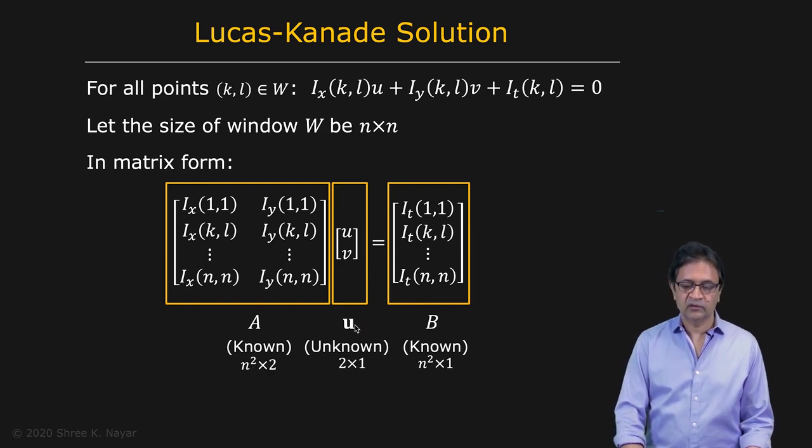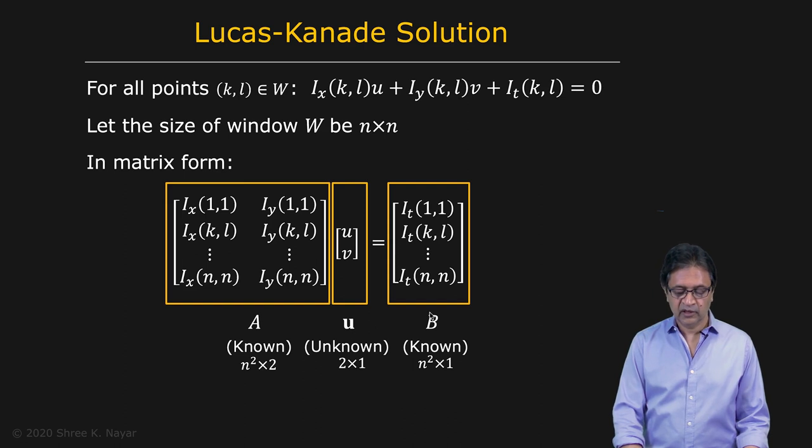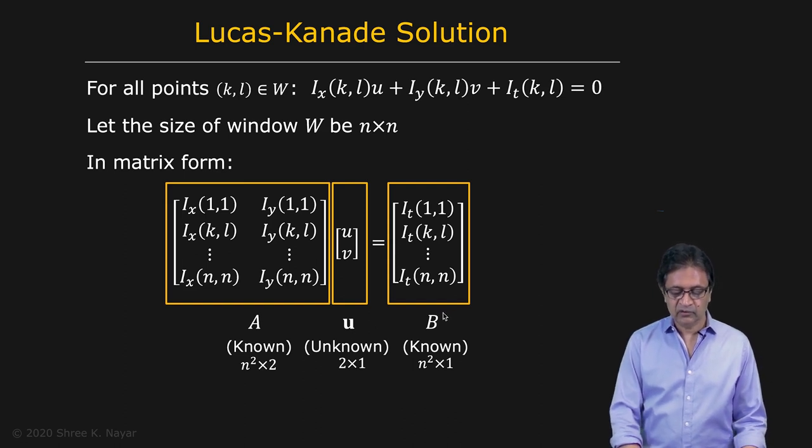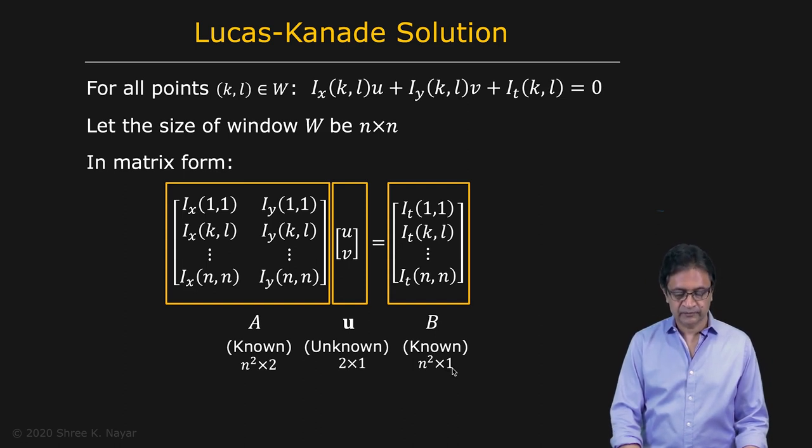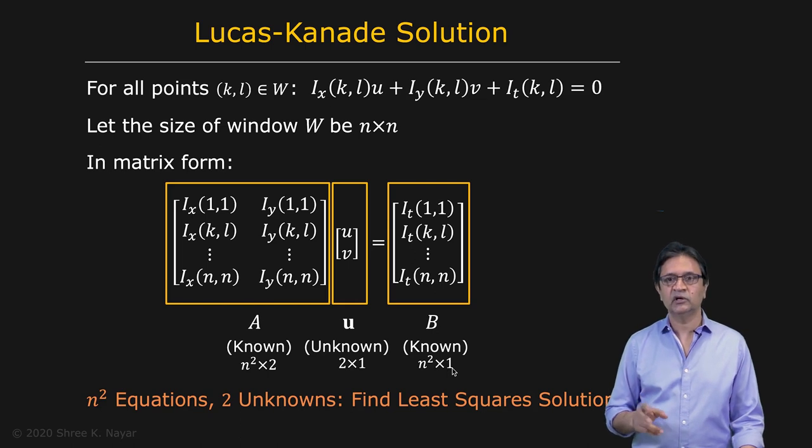You have your unknown vector here, this is what we're trying to find for the window. That's optical flow. And then you have your known vector on the right hand side, which is again n squared by one. So you have n squared equations and you have two unknowns.